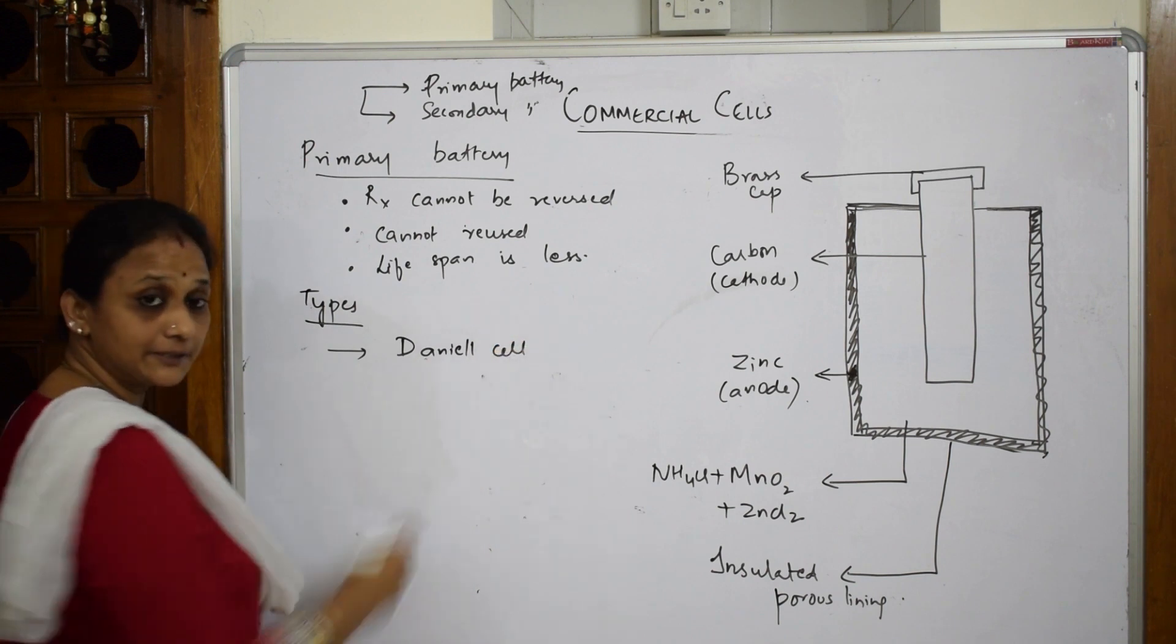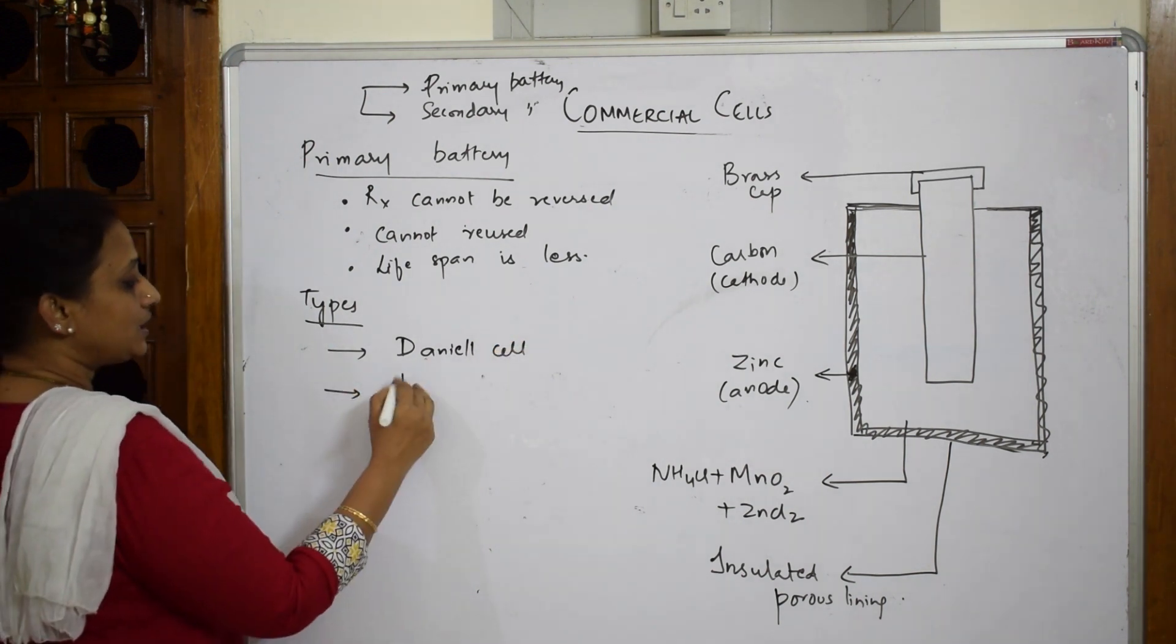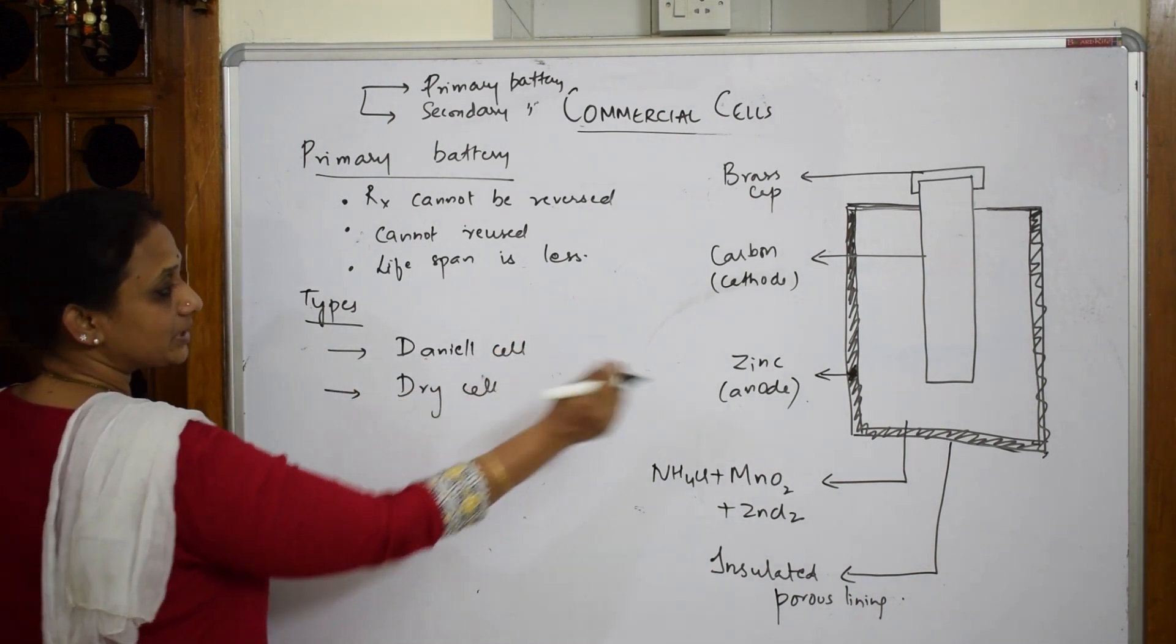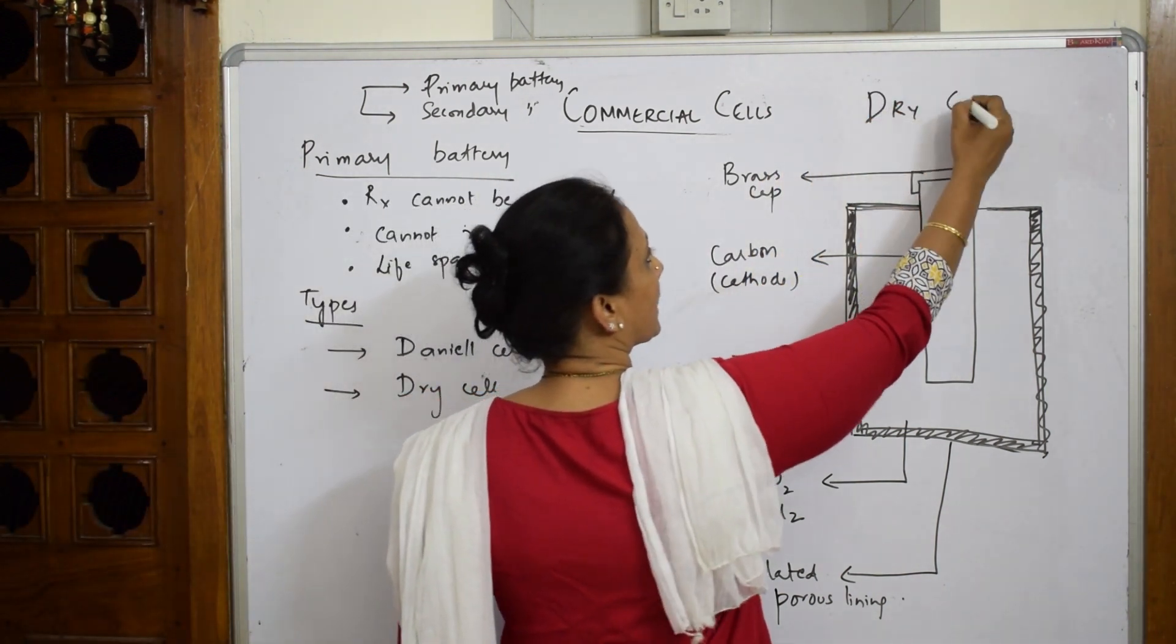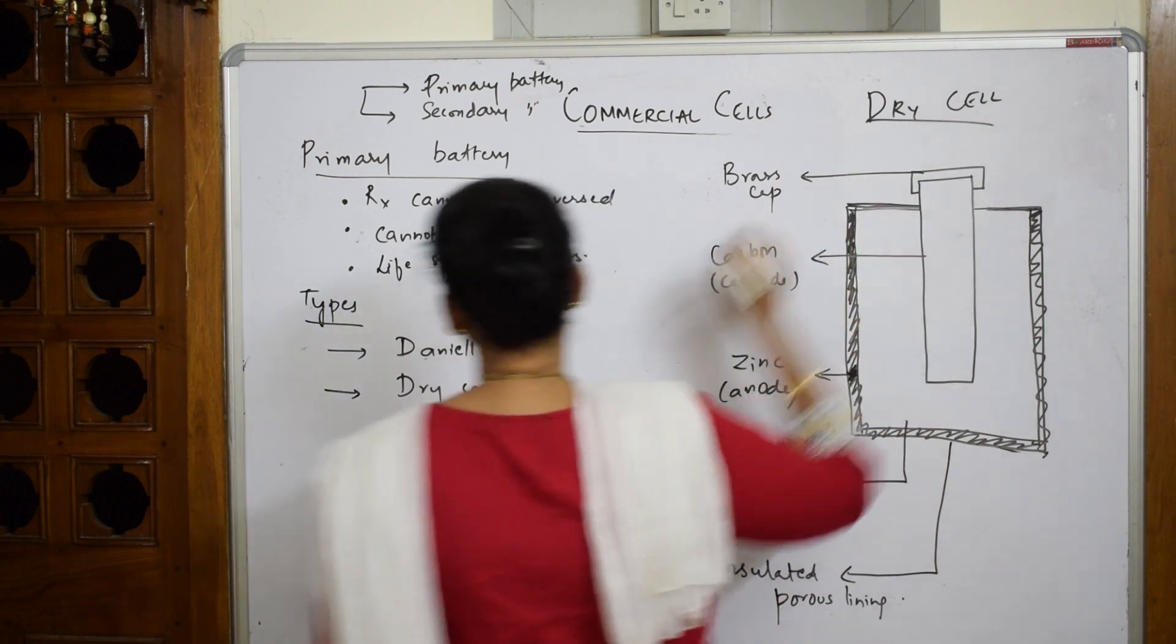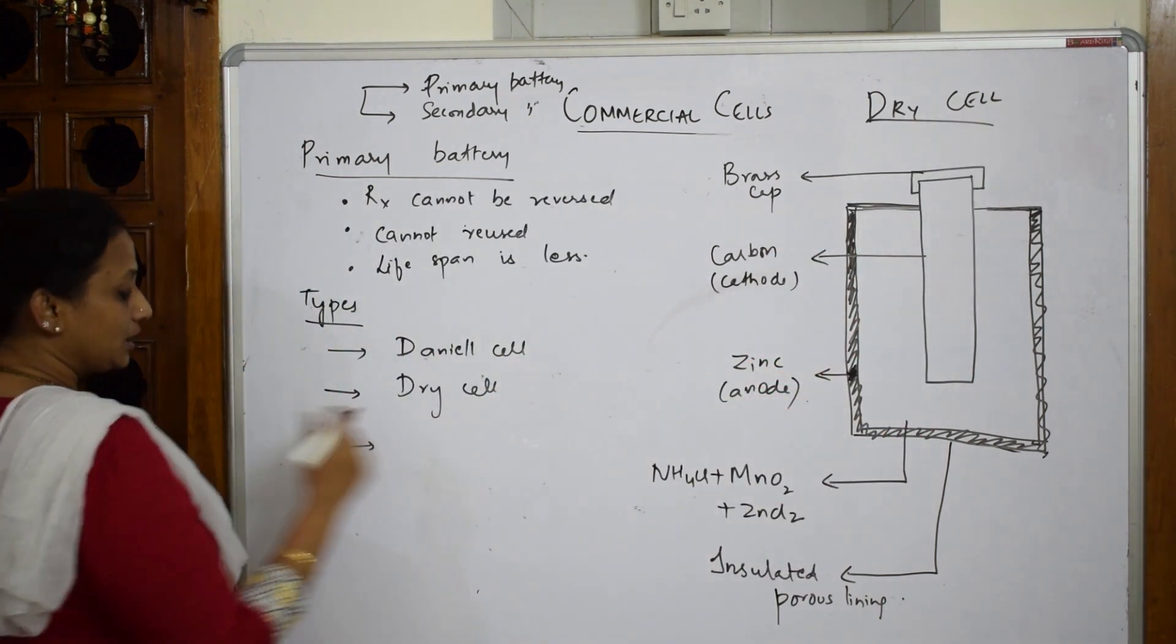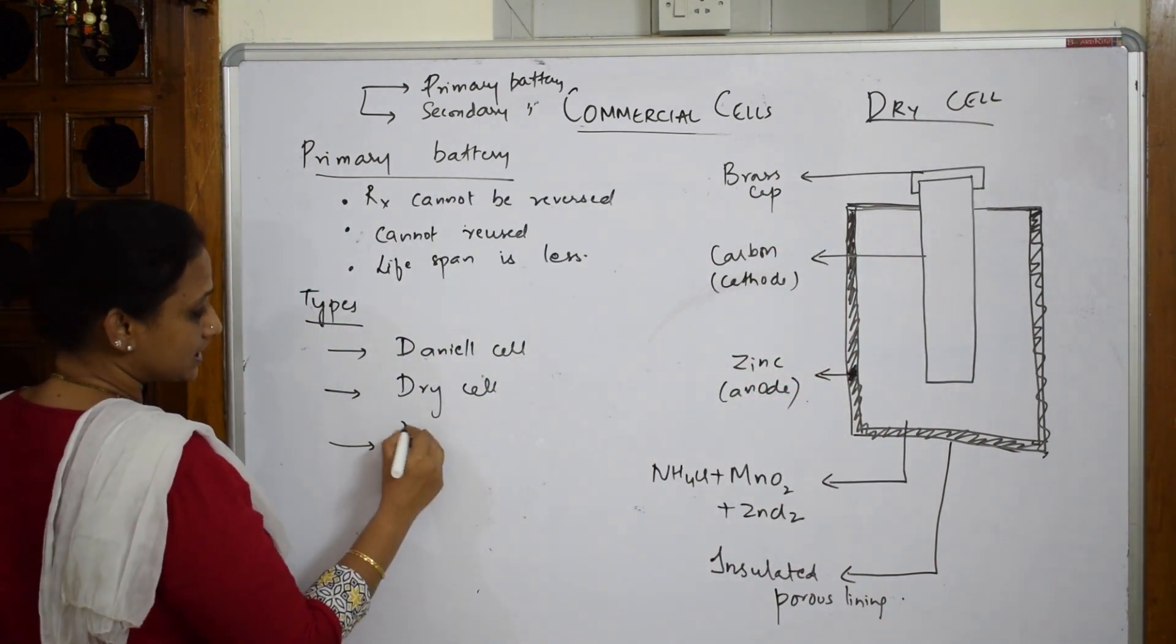The second type would be dry cell, which I've made the diagram here. And the third one would be your mercury cell.